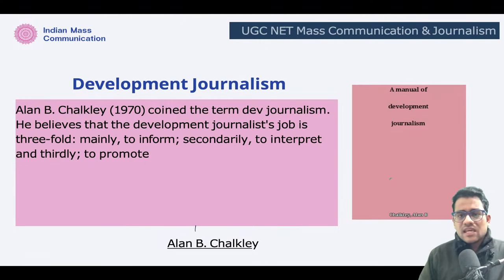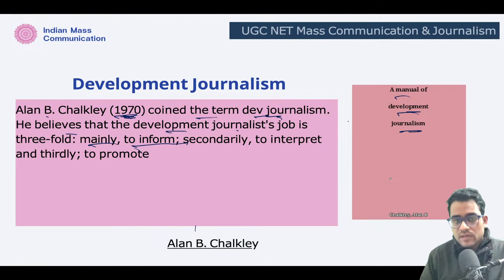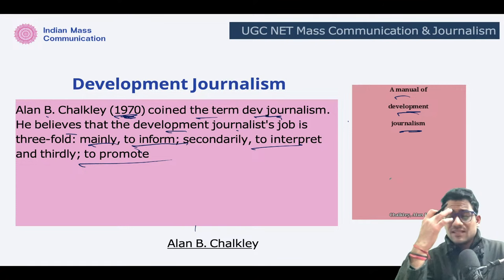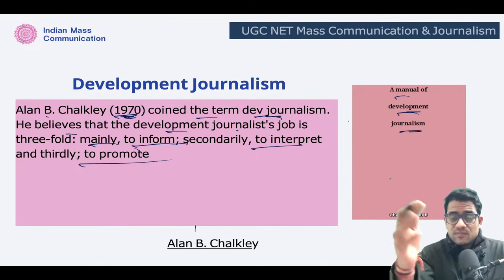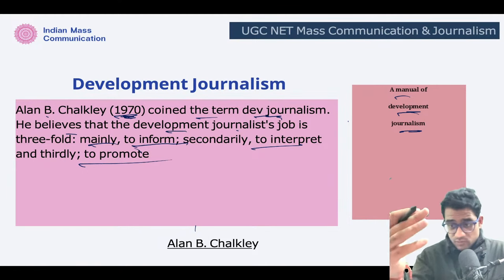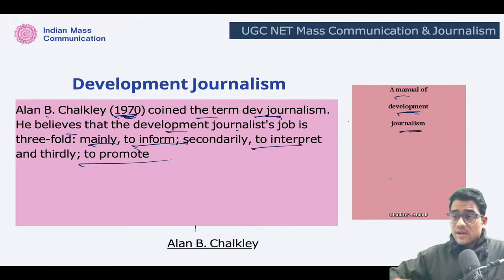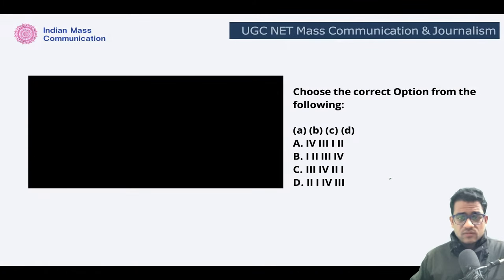Alan Chalkley wrote a manual on development journalism. This concept was propounded in 1970. Alan Chalkley coined the term 'development communication' and believed that the development journalist's job is threefold: to inform, to interpret, and to promote. During the 1970s, a lot of modernization projects started by western countries in third world countries actually failed. He was referring to the fact that development journalists should inform stakeholders about the progress in developmental projects, try to interpret what is going on, and also promote the development initiatives.